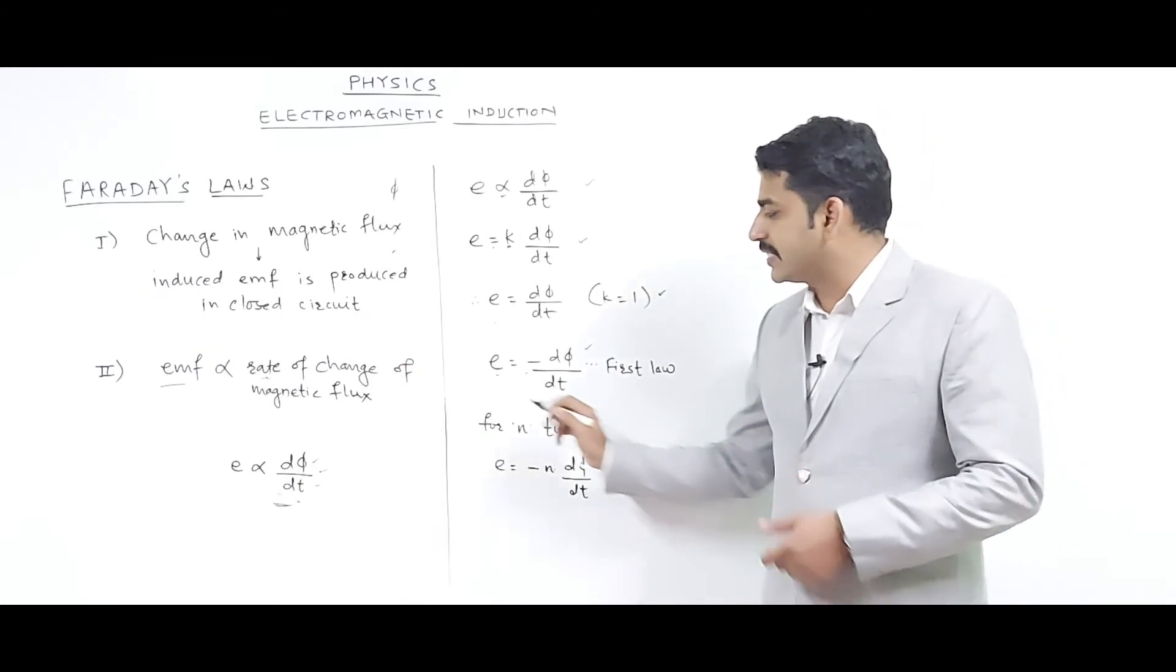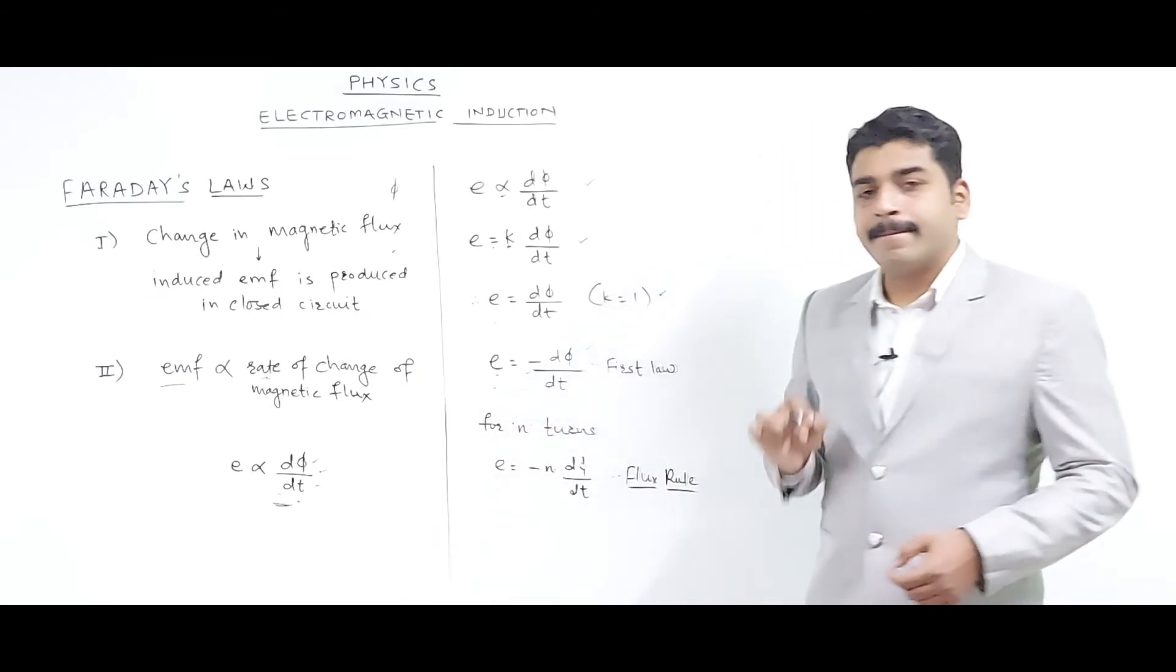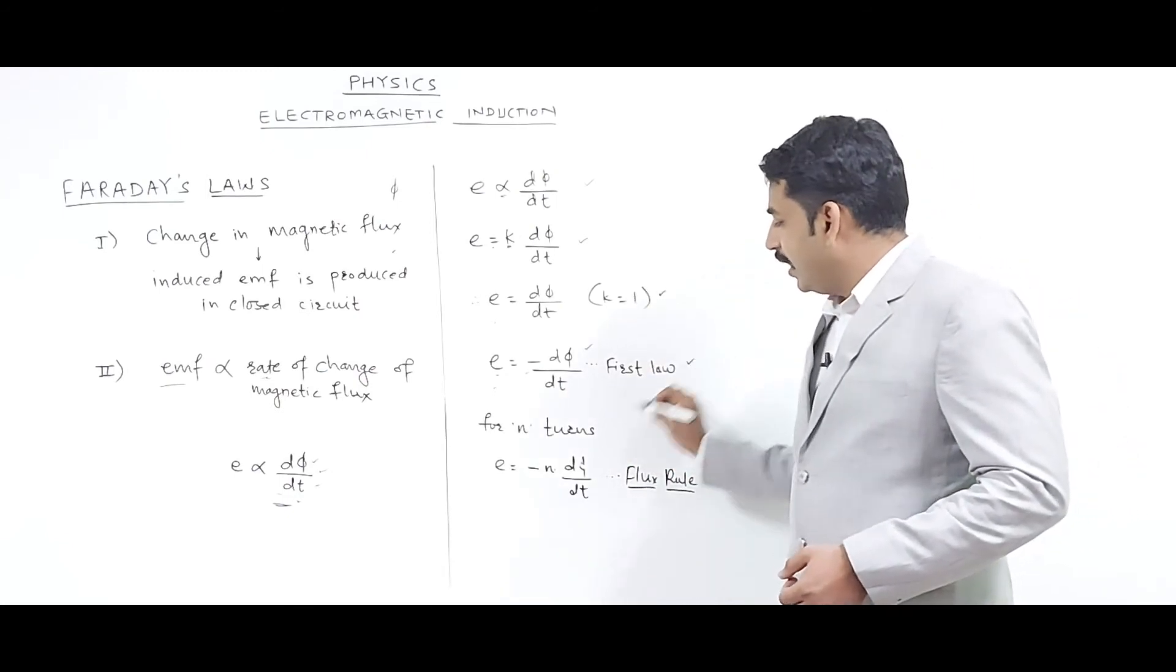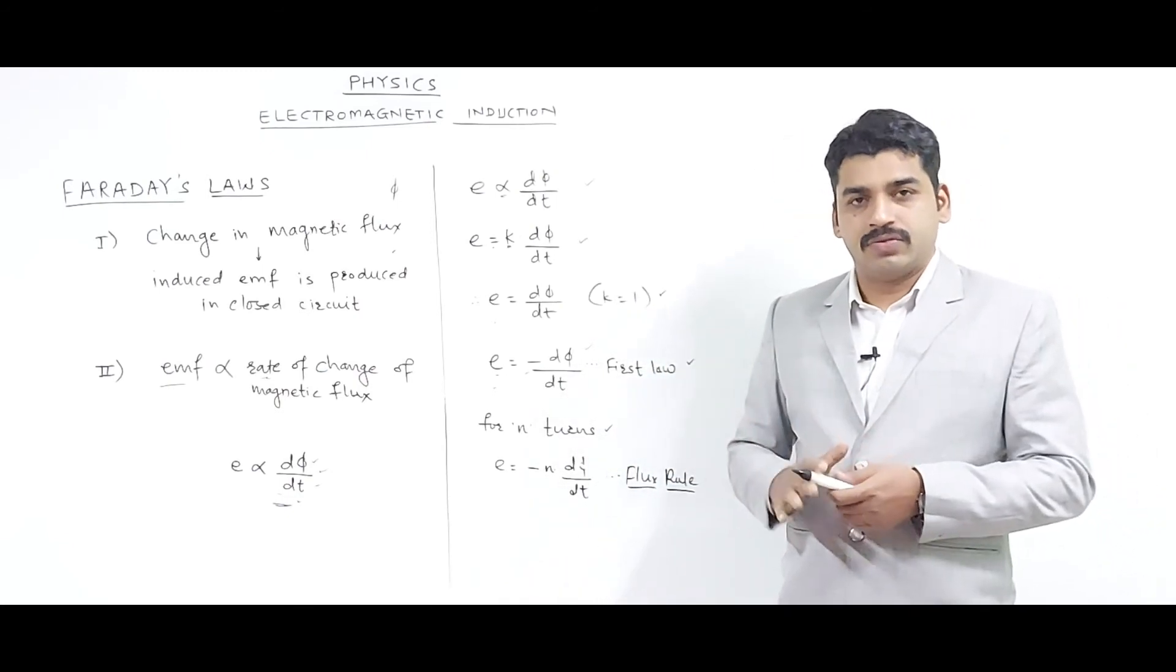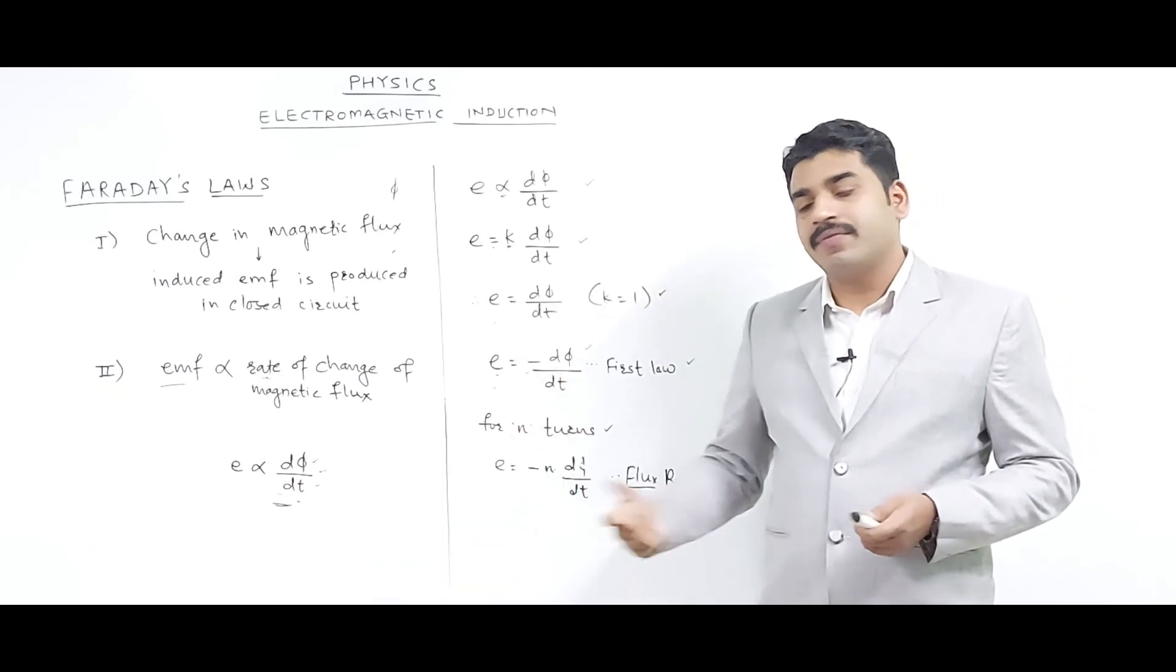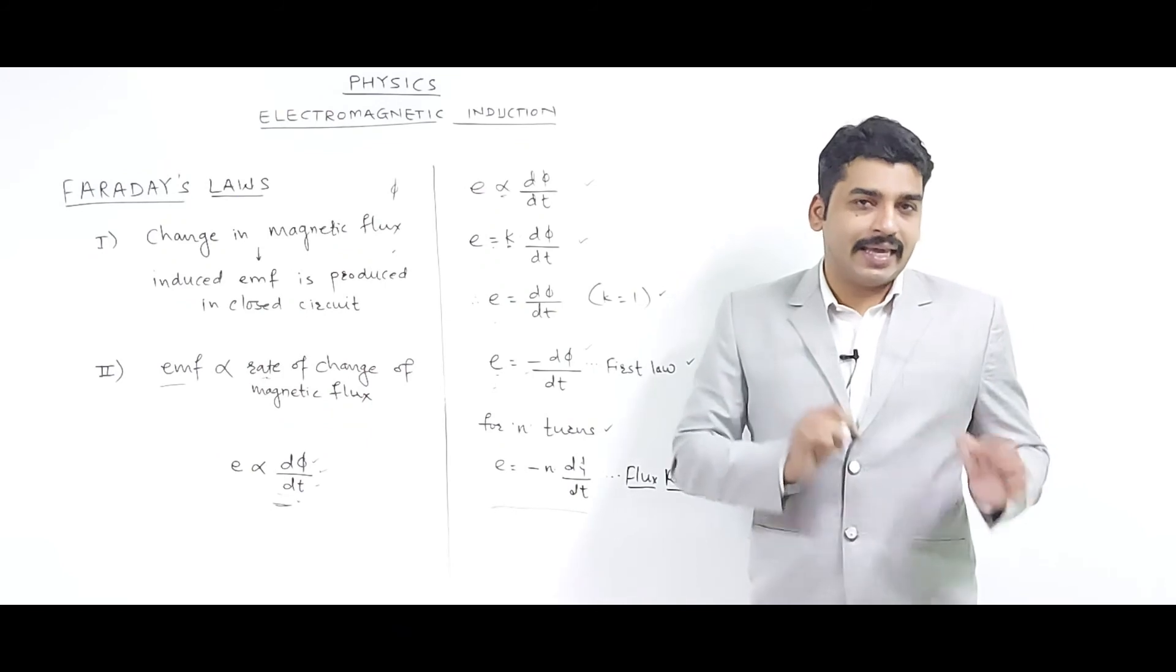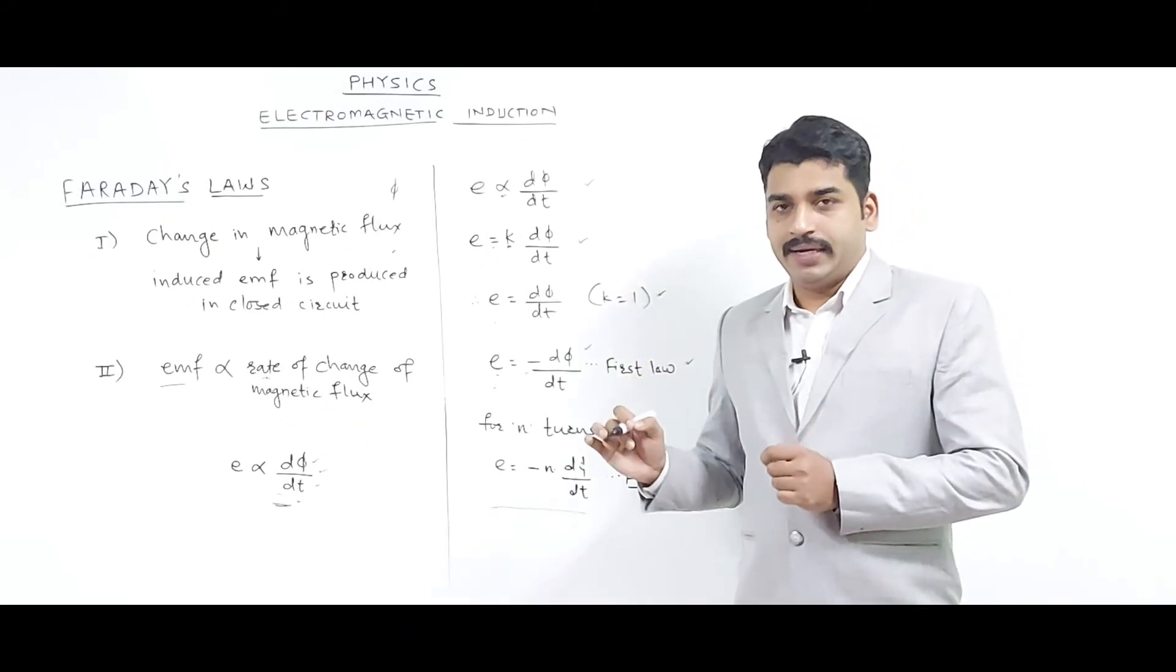So our statement becomes e equals minus dΦ/dt. Now if the coil has a number of turns, if there are n number of turns, we can multiply it with those number of turns. So finally what we get is e equals minus n times dΦ/dt. So this is Faraday's law.